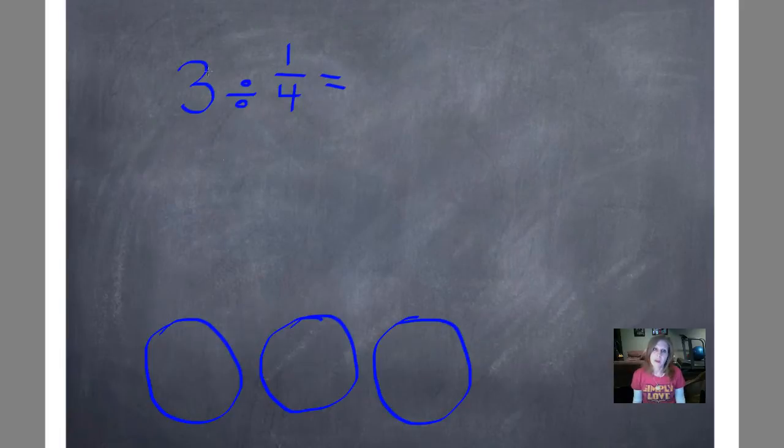So the really cool thing is that we can use multiplication to actually solve this problem. We're going to write our whole number as a fraction first, so we'll write three over one. And then we're going to multiply by the reciprocal of one-fourth, which means that I flip one-fourth so that the denominator is the numerator and the numerator is the denominator. Now I just multiply like a regular fraction multiplication problem. Three times four is twelve, one times one is one, and we know that's an improper fraction, so twelve divided by one equals the whole number twelve.